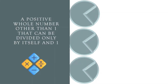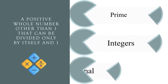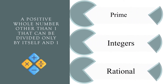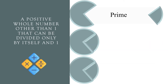A positive whole number other than one that can be divided only by itself and one. Prime, integers, or rational? The correct answer is prime.